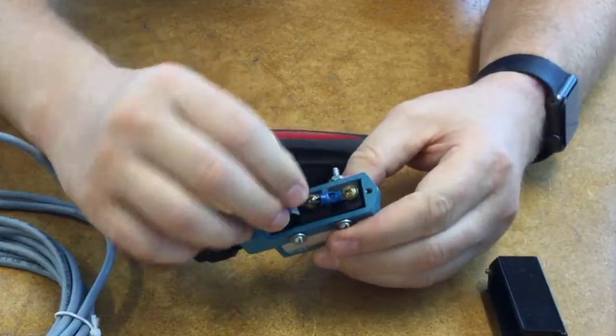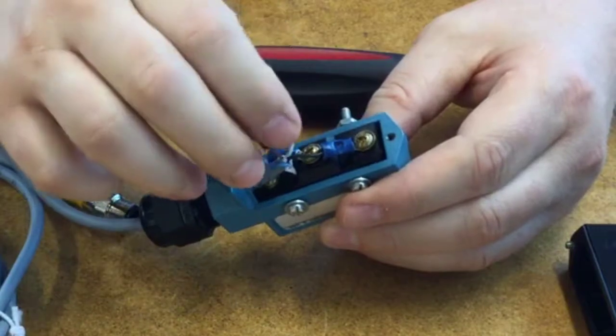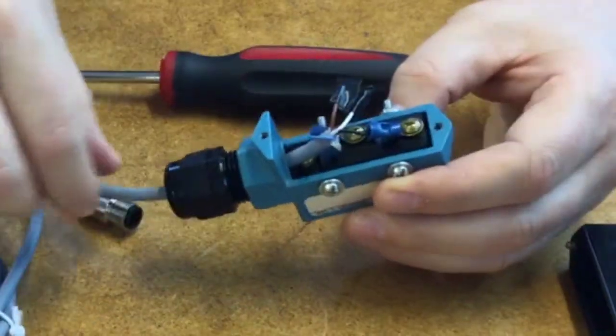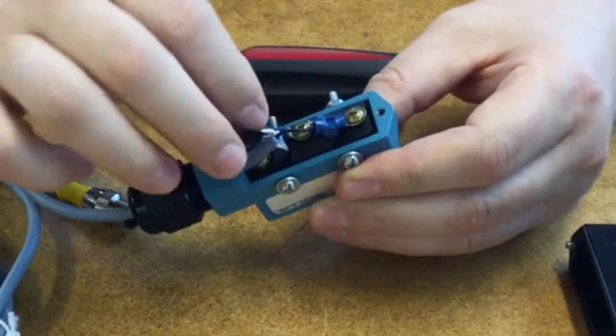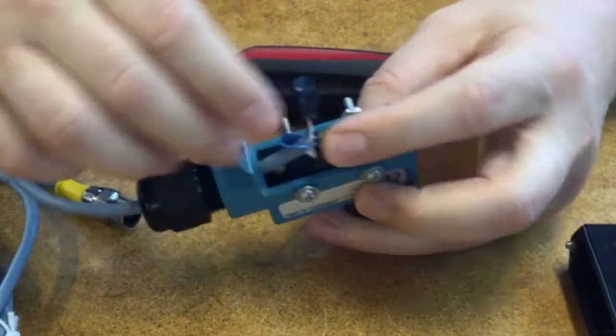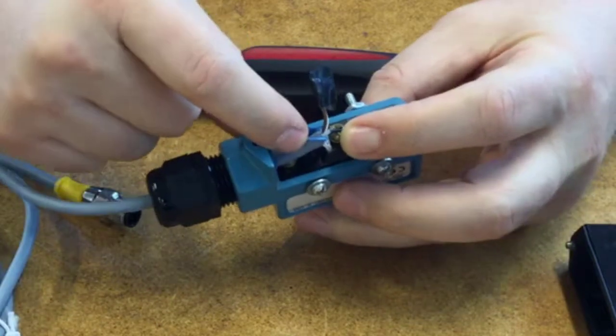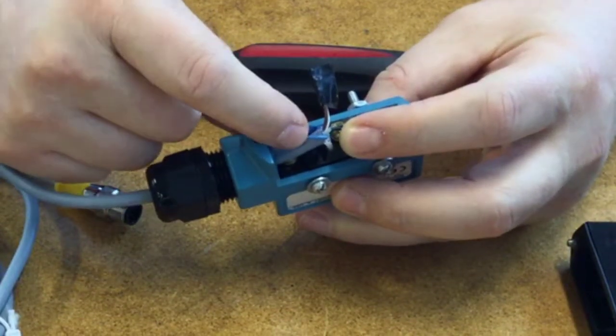So here now we can see the four leads coming out of the flying lead end of the 124-300 cable. We've got brown and white which are not going to be used, and then we've got black and blue which are the two that you use for any dry contact switch that you want to wire to the G3.